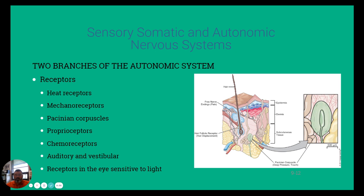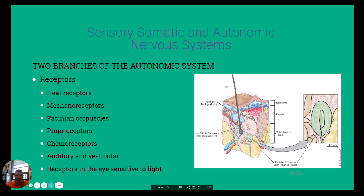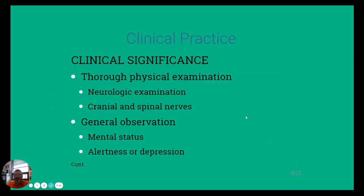Looking at the branches of this system, we have heat receptors, mechanical receptors, chemoreceptors, and eye receptors, and so on. We also see a cutaway image showing a free nerve ending right in the surface tissue and a deep pressure corpuscle further down that would be sensitive if touched deep into the tissue — these send a signal that there's potentially some kind of damage or injury, or a need to retract.